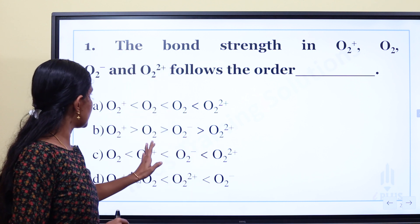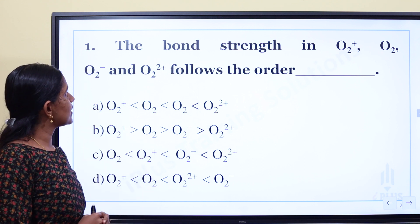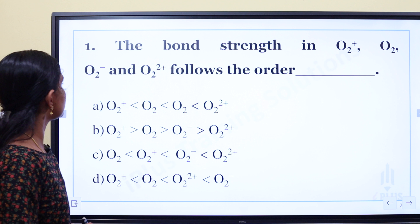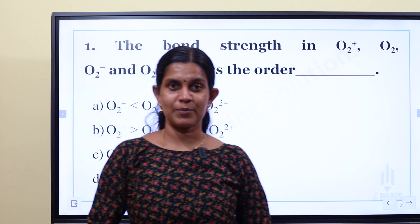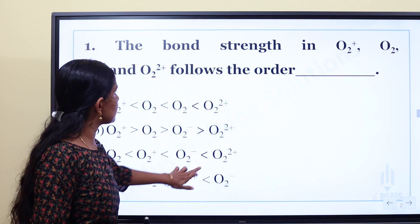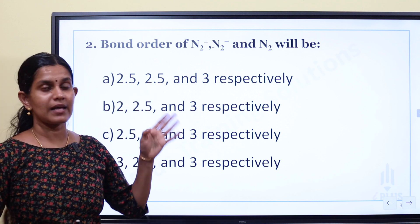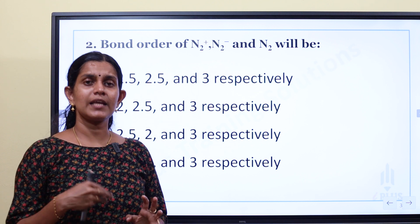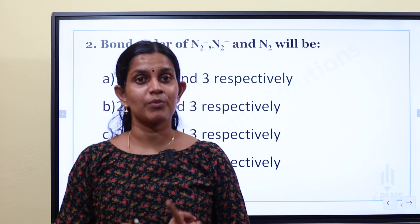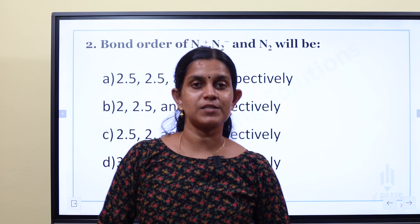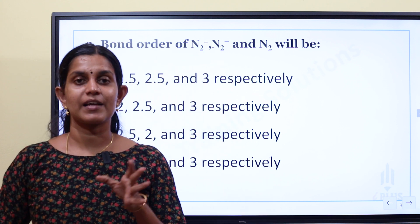We will predict the order of bond strength in O2⁺, O2, O2⁻, and O2²⁻. We will also try one type of question involving N2⁺, N2, N2⁻ — covering bond strength, bond order, bond length, and bond dissociation. How do we do this? We apply Molecular Orbital Theory.